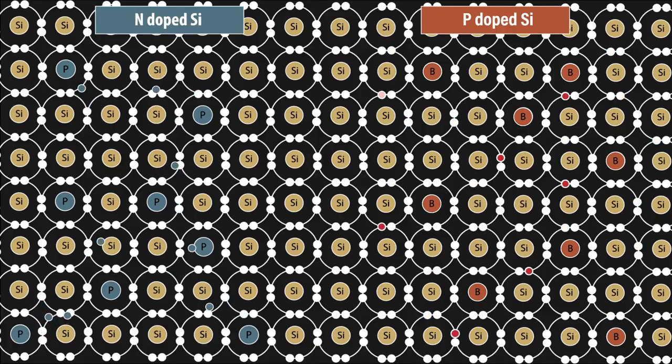Boron has one less electron for bonding than silicon, and is thus missing an electron, which leaves a hole where an electron should be, and is P-doped. Likewise, phosphorus has an additional electron, and is N-doped.